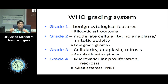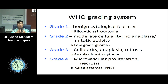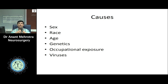Certain tumors are more common in a particular race, and there are tumors which are age-specific. For instance, primitive neuroectodermal tumors and medulloblastomas are classically present in children or young adults, whereas metastases are classically present in adult populations. Genetics is one of the most important research topics, and some progress has been made in finding the genetics behind development of gliomas. Occupational exposures and certain viruses have also been associated with certain tumors, but these are all inconclusively proven.